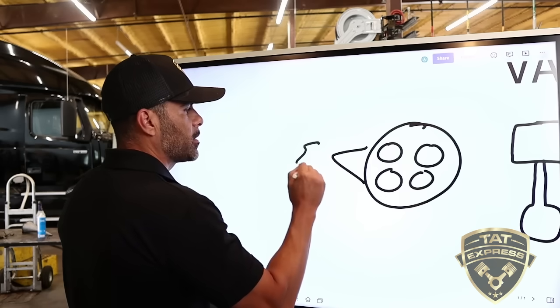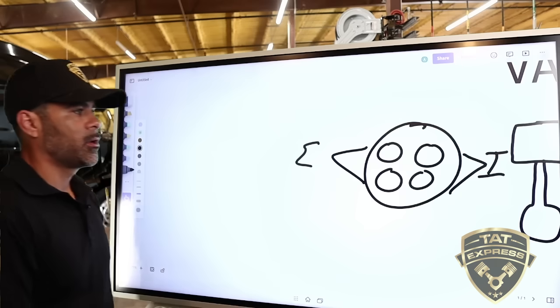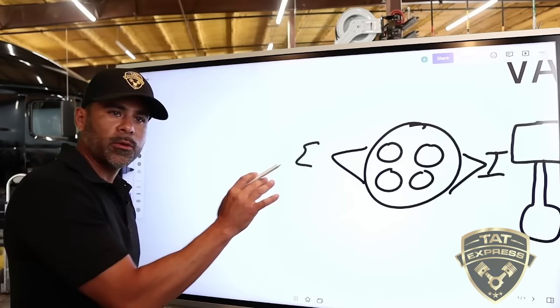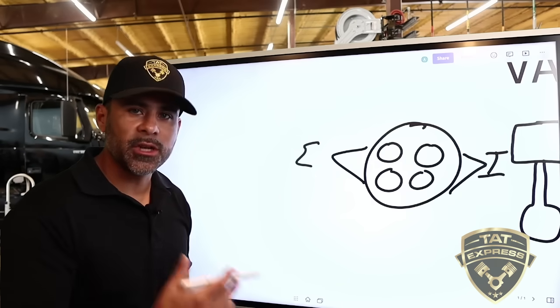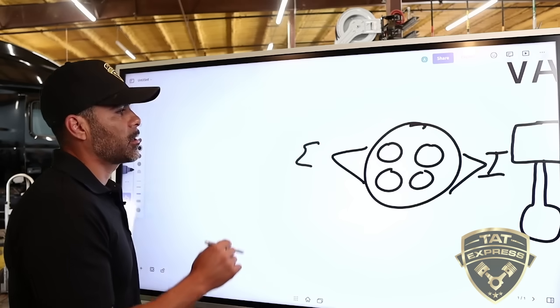You're going to have two exhaust valves and two intake valves. So these are the valves that we're speaking about when it comes to adjusting the valves, worn valves, burnt valves. This is the valves that we're talking about.